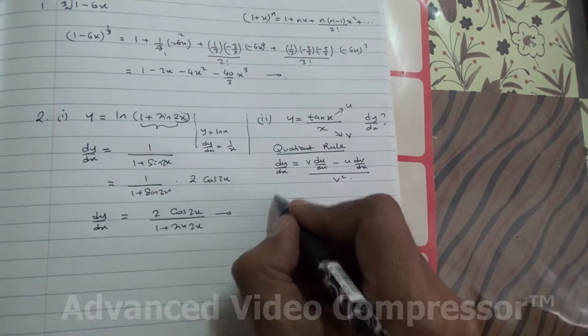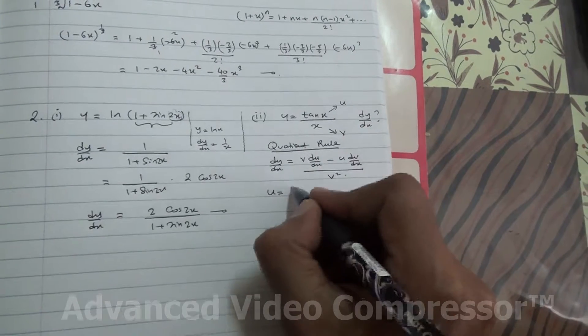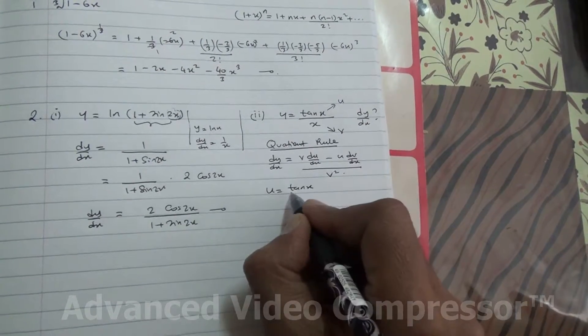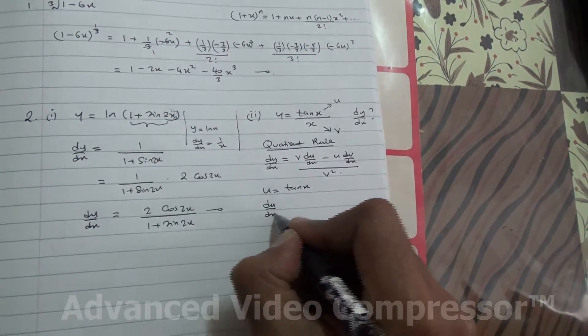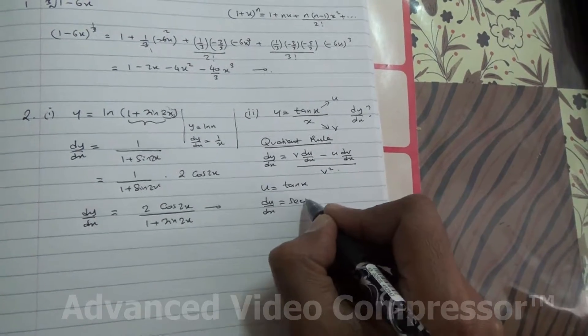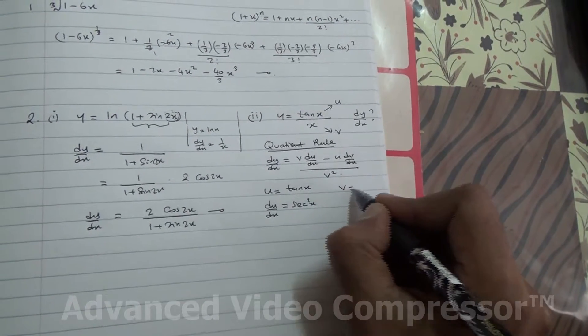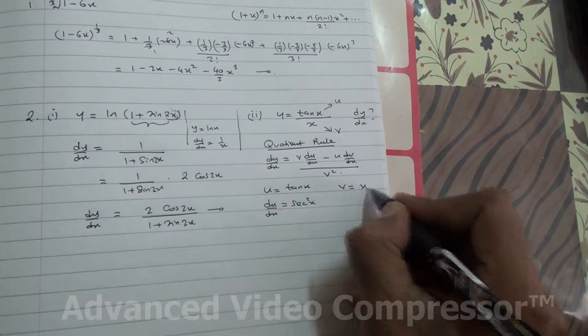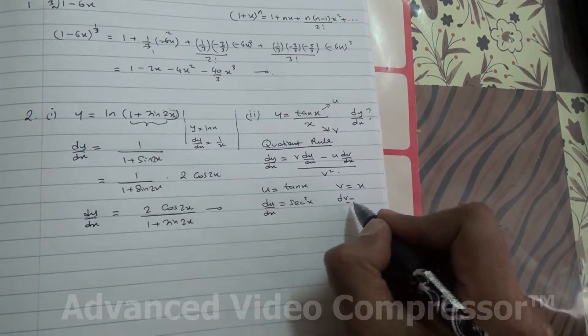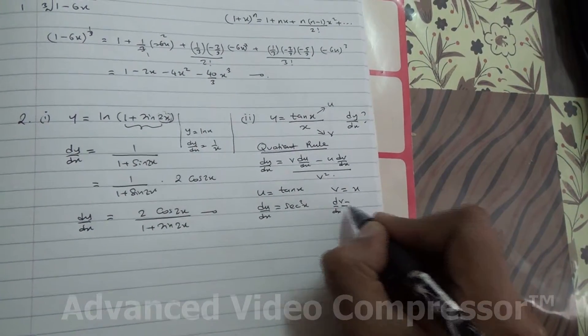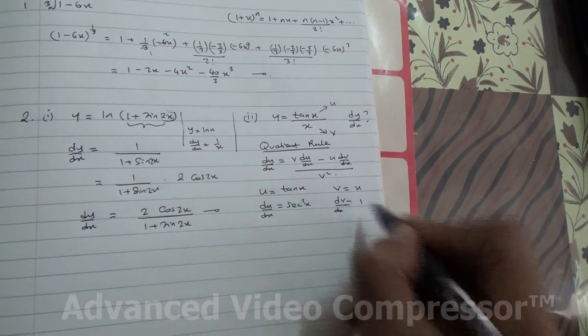Now we have u equals tan of x. And when you differentiate tan, you're going to get du by dx equals sec square x. And you have v equals x. When you differentiate v, dv by dx, you're going to get 1.